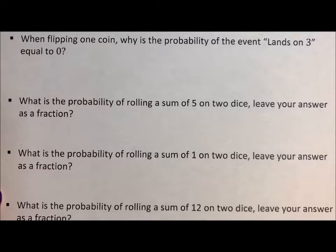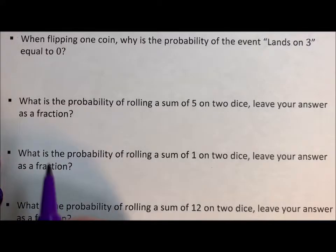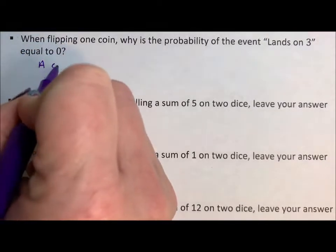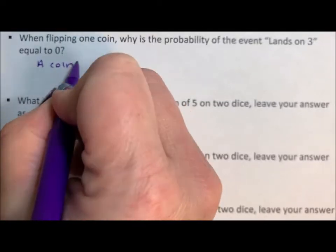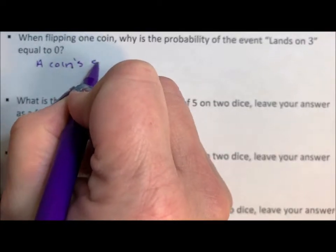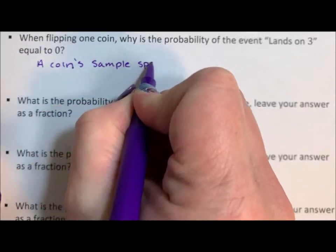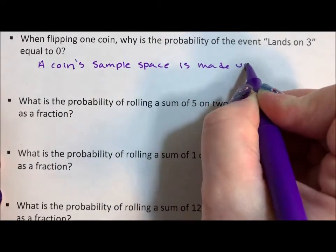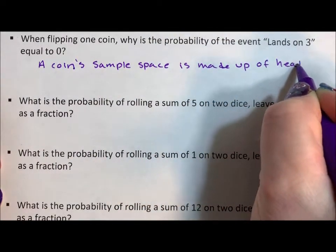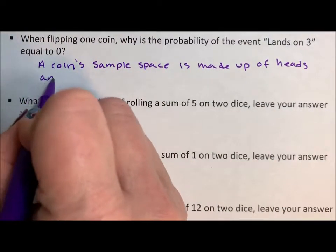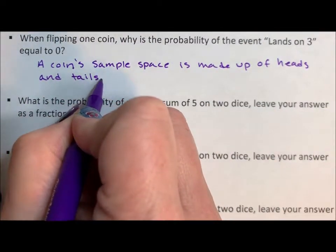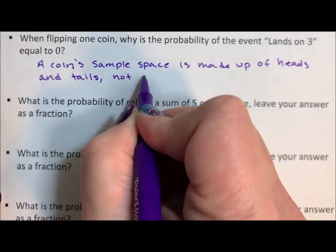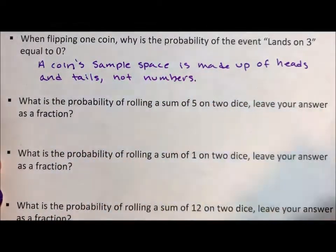When flipping one coin, why is the probability of the event 'lands on 3' equal to zero? Well, a coin's sample space is made up of heads and tails, not numbers. Numbers make no sense, so 'lands on three' just doesn't make sense when you're talking about flipping a coin.